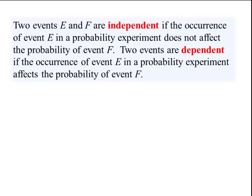Lesson objective 1. Two events E and F are independent if the occurrence of event E in a probability experiment does not affect the probability of event F. The two events are dependent if the occurrence of event E in the probability experiment affects the probability of event F.